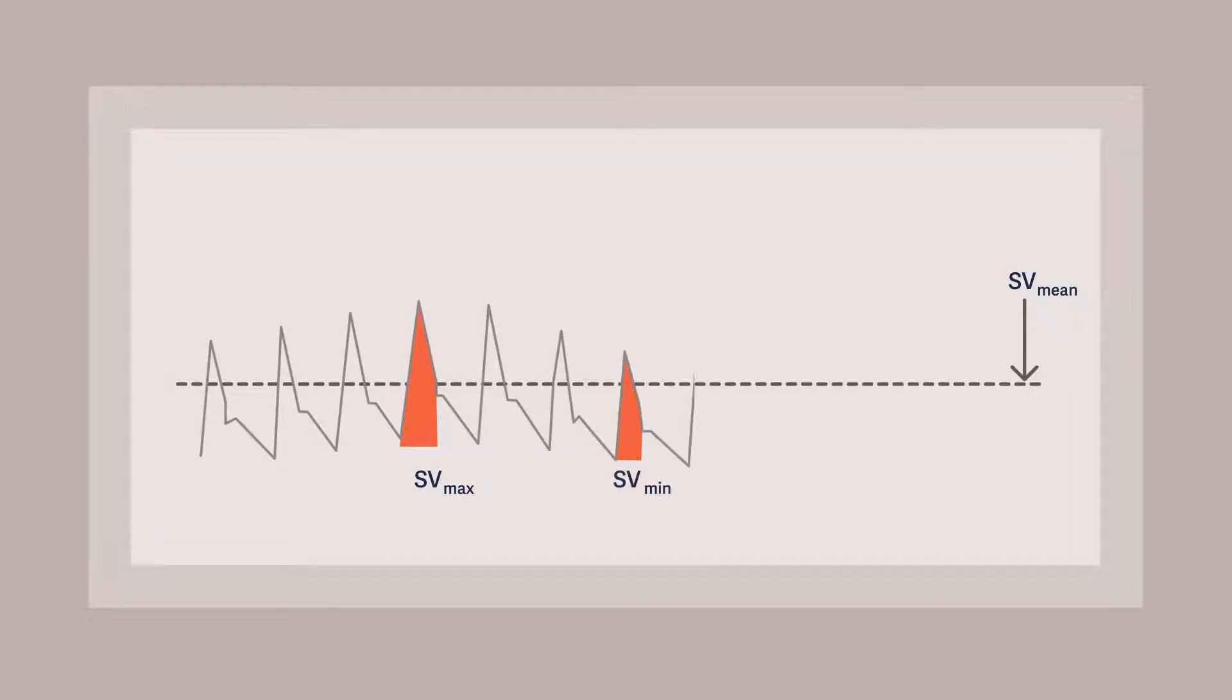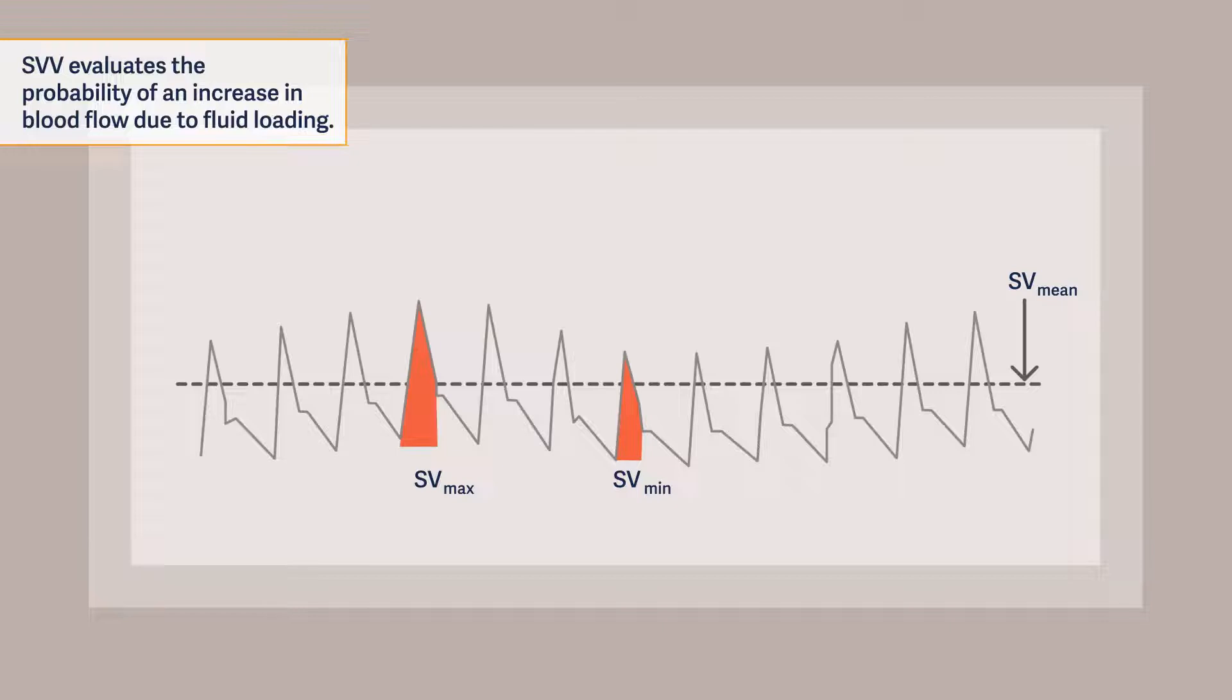Additionally, the stroke volume variation or SVV is also derived by the pulse contour analysis. It is a parameter on volume responsiveness that evaluates the probability of an increase in blood flow due to fluid loading.